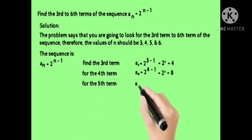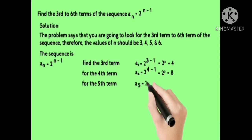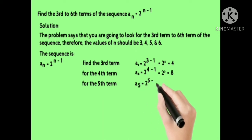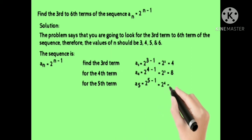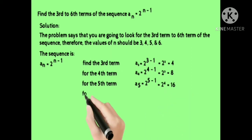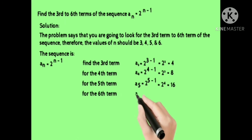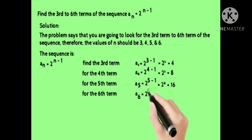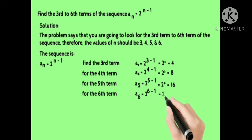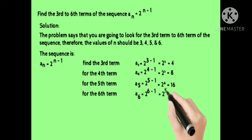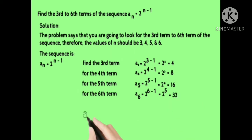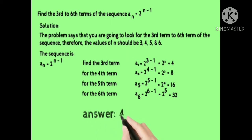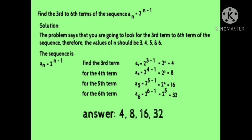For the fifth term, a sub 5 is equal to 2 raised to 5 minus 1, which equals 2 raised to 4. 2 raised to 4 is equal to 16. For the sixth term, a sub 6 is equal to 2 raised to 6 minus 1, which equals 2 raised to 5. 2 raised to 5 is equal to 32. Therefore, the third to sixth terms of the sequence are 4, 8, 16, 32.